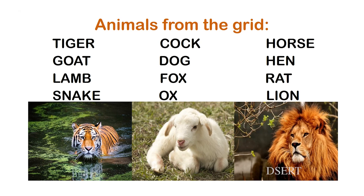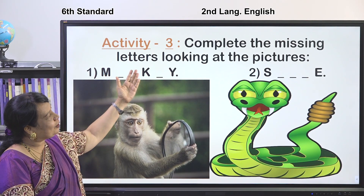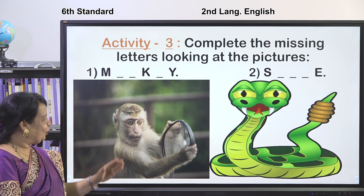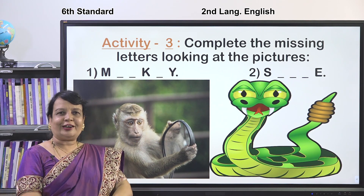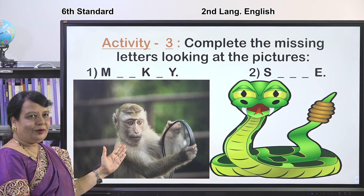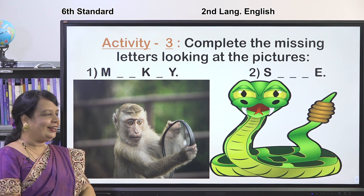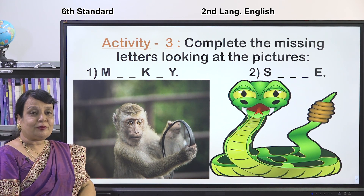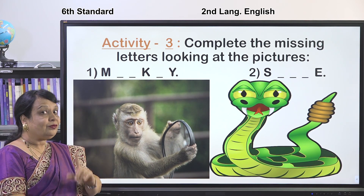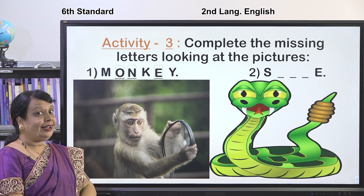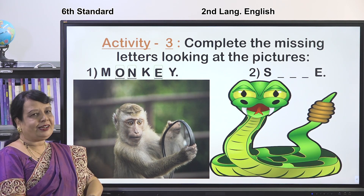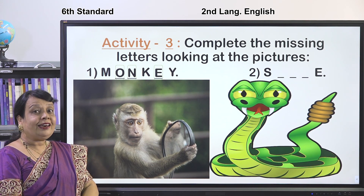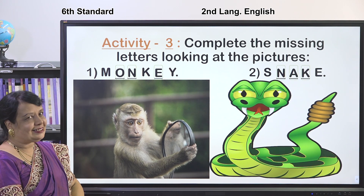Shall we go to Activity 3? Complete the missing letters by looking at the pictures. Which is this animal? It is a monkey — M-O-N-K-E-Y. Which is this animal? It is a snake — S-N-A-K-E.